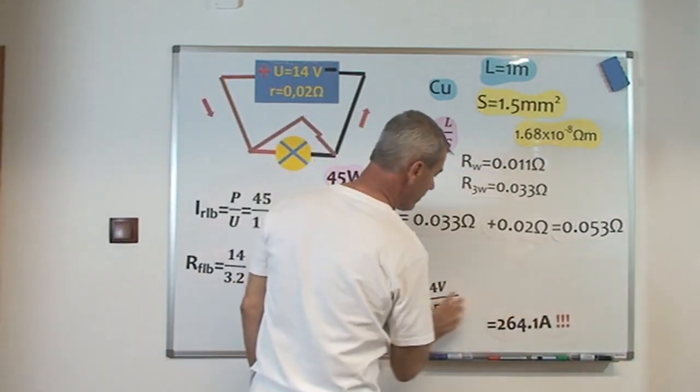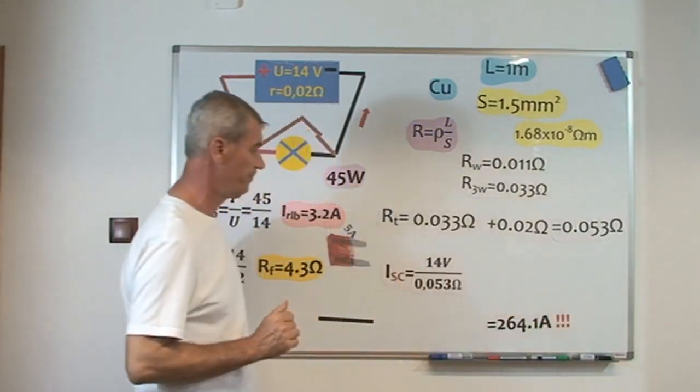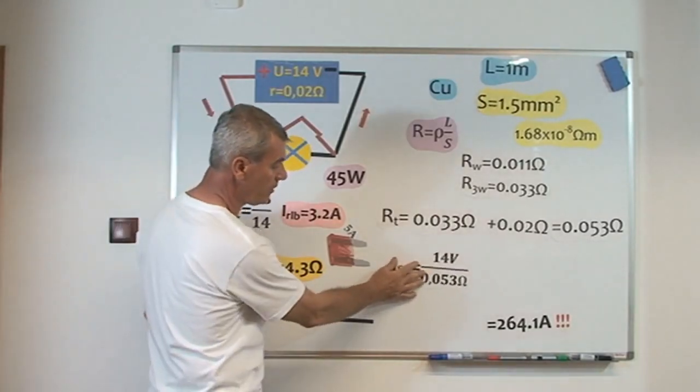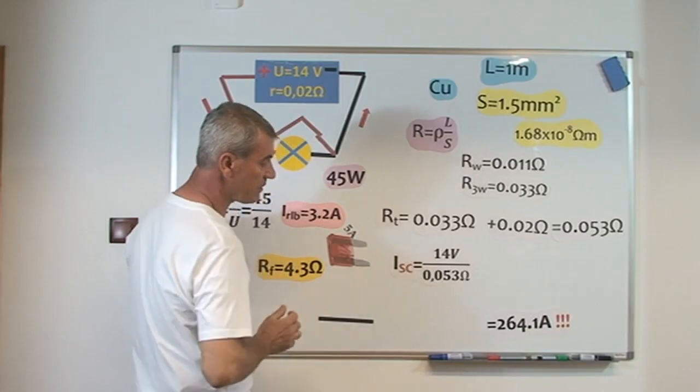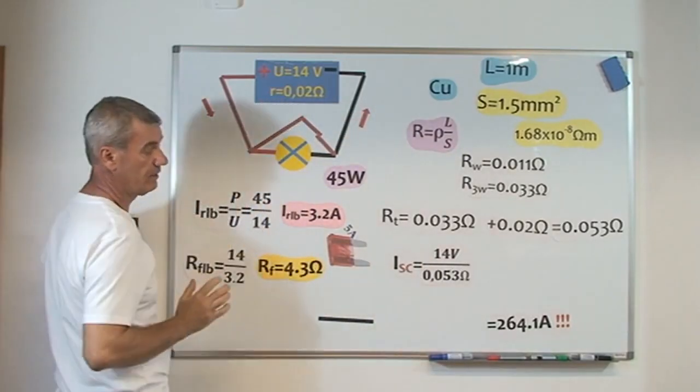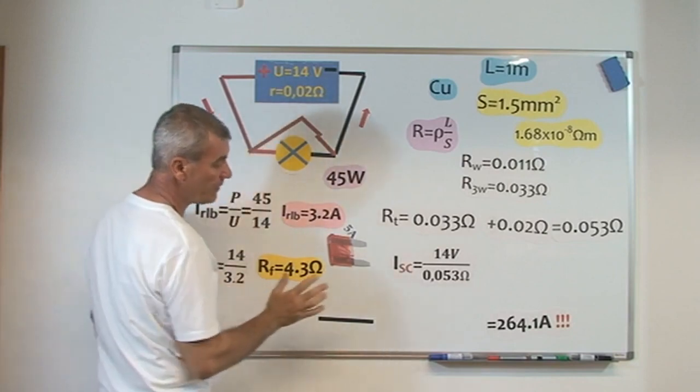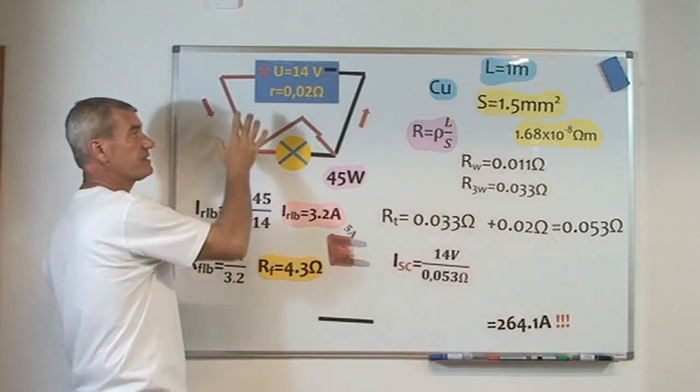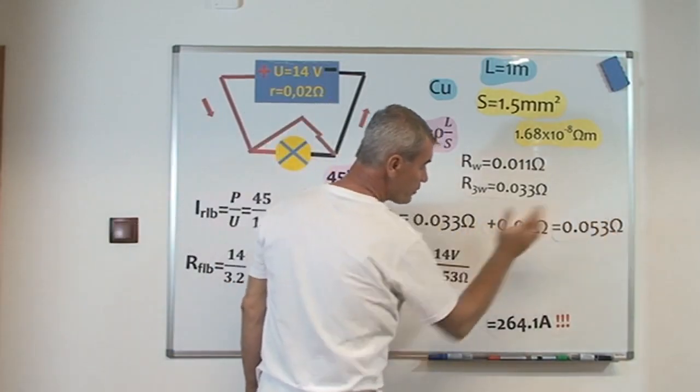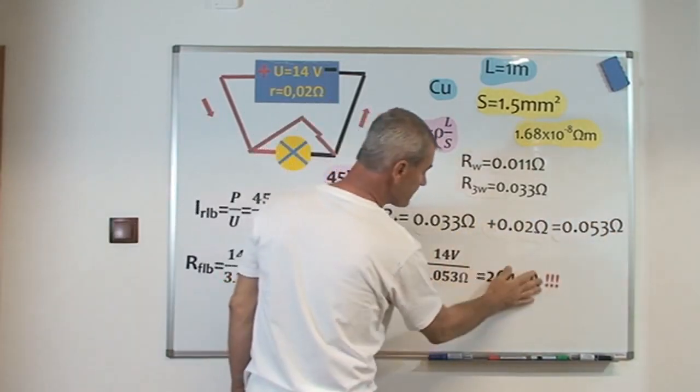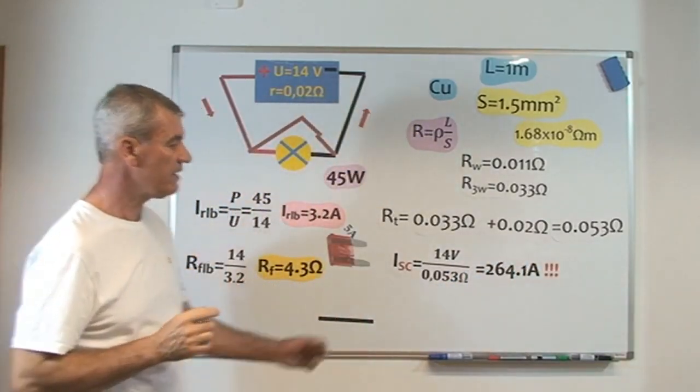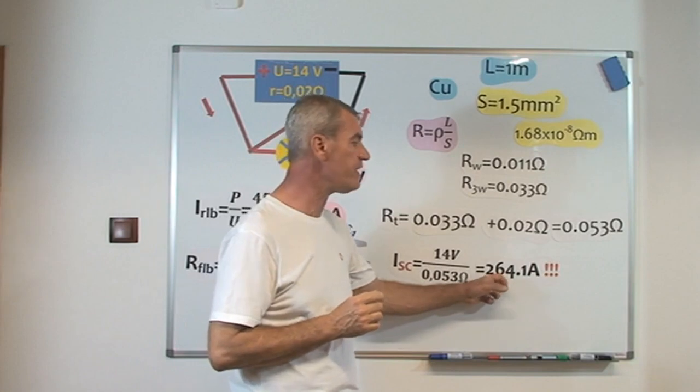But what happened with our short circuit current? Using Ohm's law, short circuit current equals 14 volts, the voltage of the battery, divided by the whole electrical resistance in this circuit, 0.053 ohms, equals 264.1 amps. It's a very high current here.